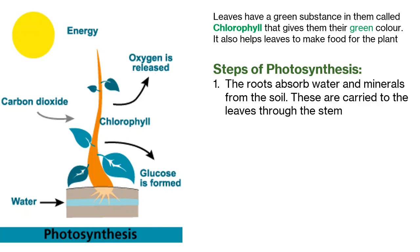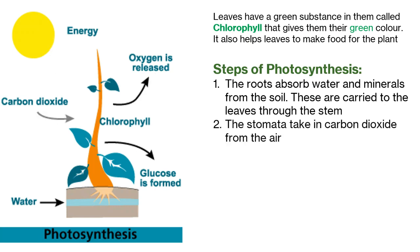First, the roots absorb water and minerals from the soil. These are carried to the leaves through the stem. The stomata take in carbon dioxide from the air.